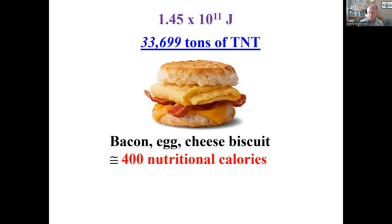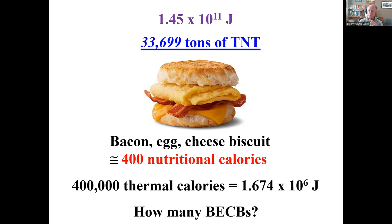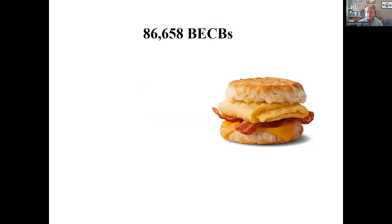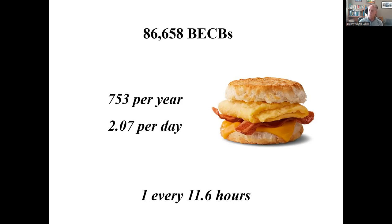A bacon and cheese biscuit is about 400 nutritional calories. Since a nutritional calorie equals 1,000 thermal calories, that's 400,000 thermal calories per biscuit, or 1.5 million joules — that's how much energy you're consuming. So how many biscuits would I have to eat to consume the same 1.45 × 10¹¹ joules it took to keep that light bulb lit? It comes out to over 86,000 bacon and cheese biscuits. That seems like a lot — but if I break it down to a daily basis, that's only two per day. Two per day: one essentially every 12 hours to keep a 40-watt light bulb on.